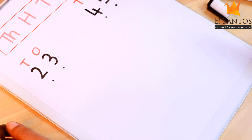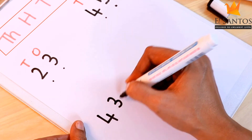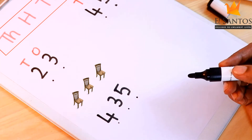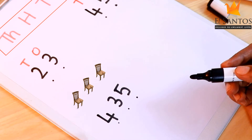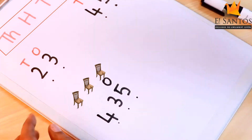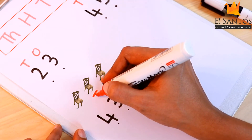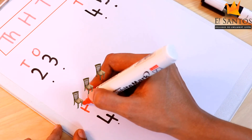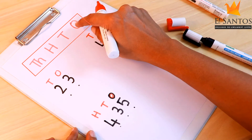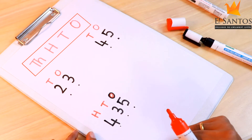Now let's write down a three-digit number. Let's count the digits — one, two, three. It's a three-digit number. Now let's write the place values on top of the number using the red pen: ones, tens, hundreds.